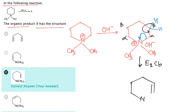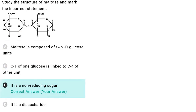After E1CB reaction, a final product is formed in which unsaturation is created and 2 methyl groups are still present. A water molecule is eliminated, and hence the correct answer is C.